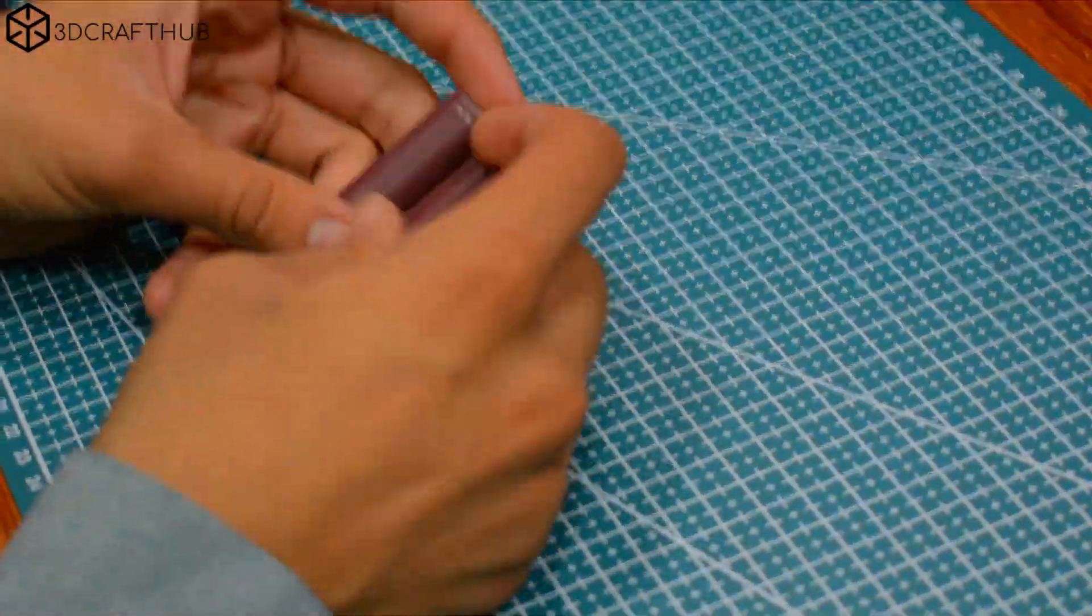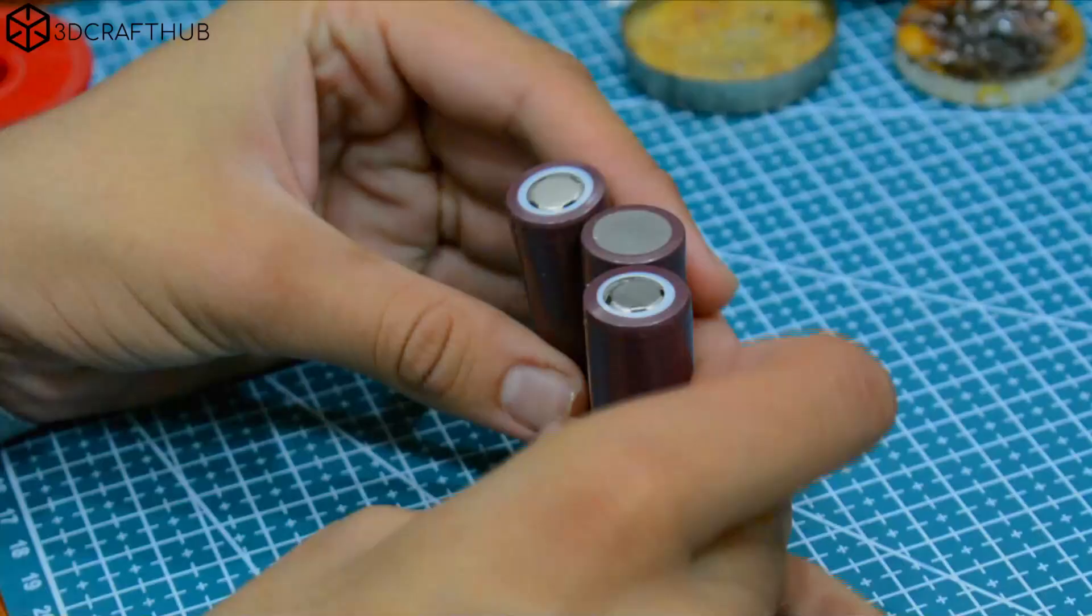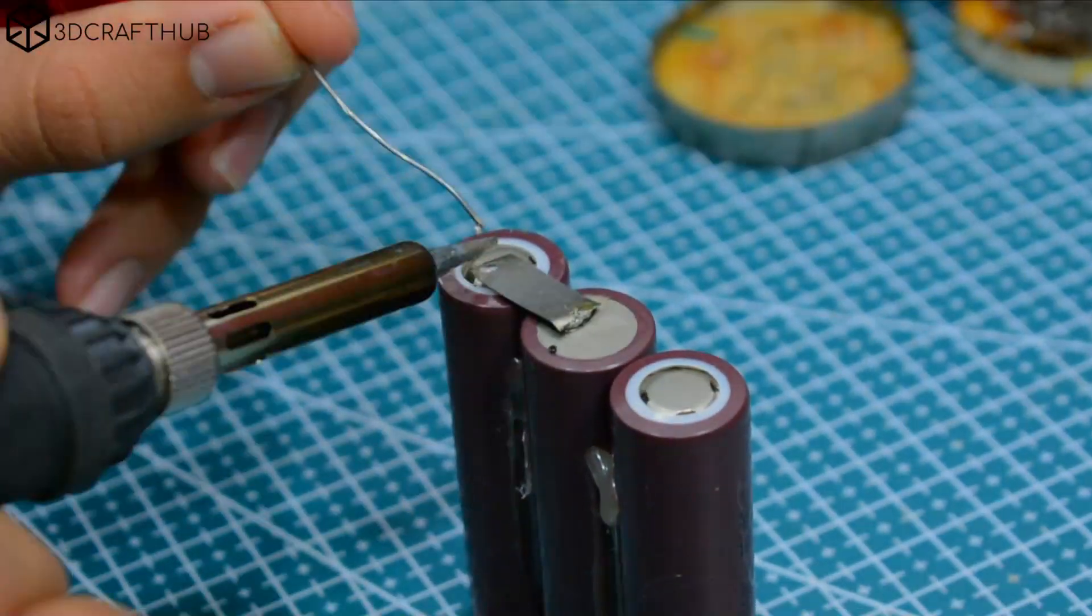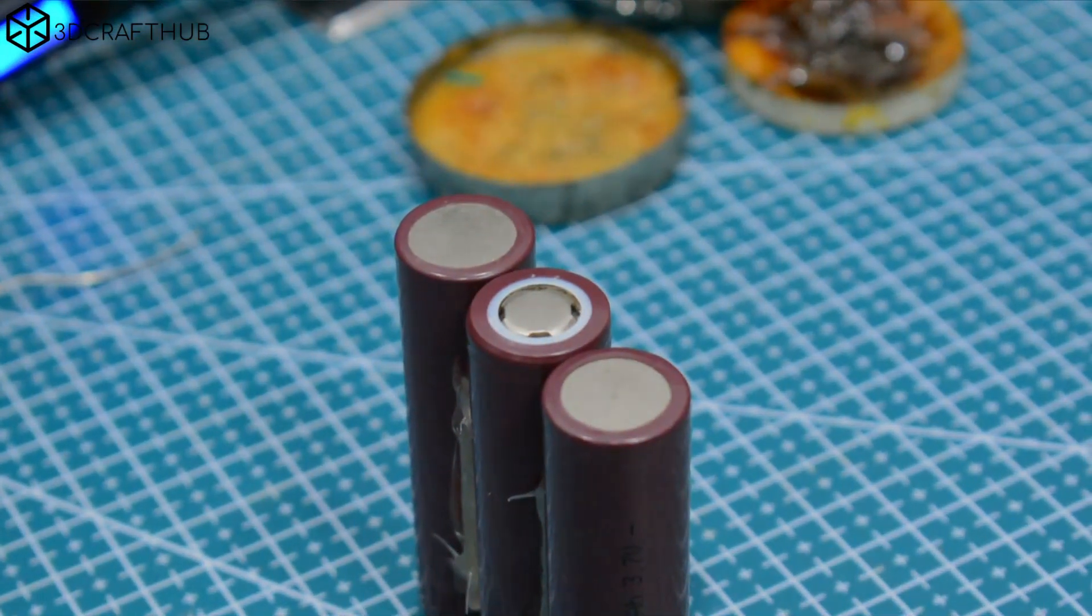Now for the muscle. Three 18650 batteries, ready to be transformed into a powerful 12-volt pack. A little solder, a few nickel strips, and we've got juice.